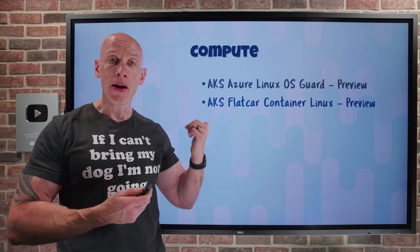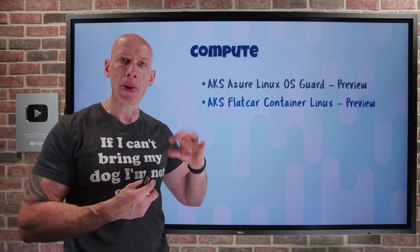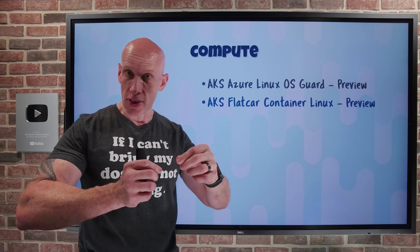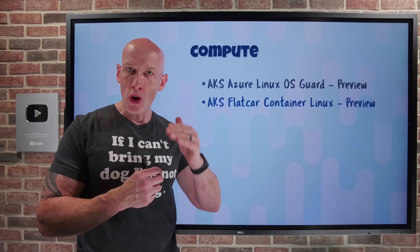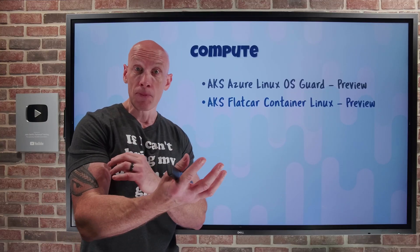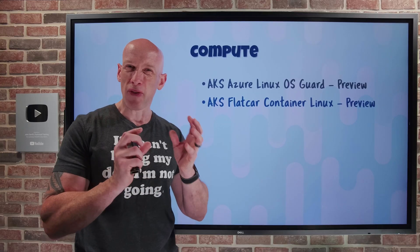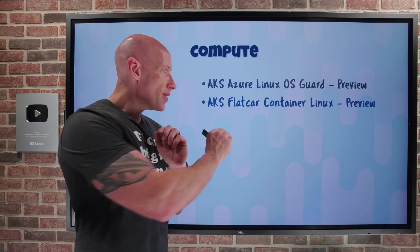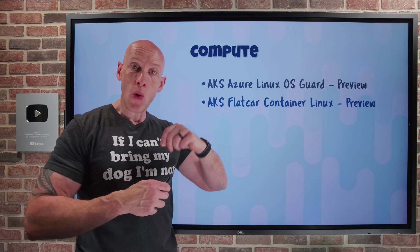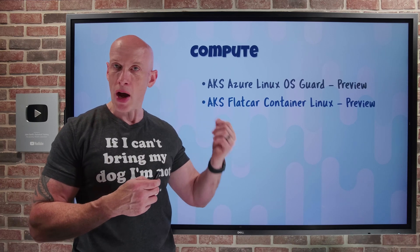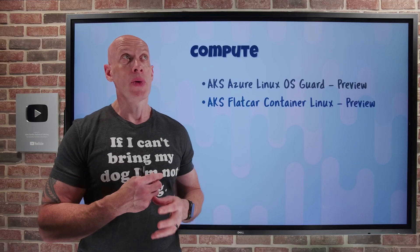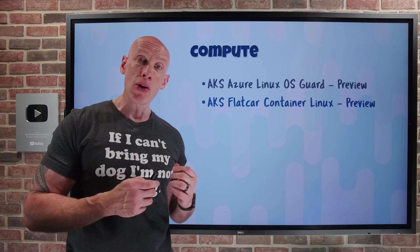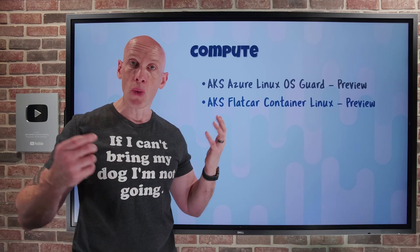AKS now supports Flatcar Container Linux in public preview. Flatcar is built on the idea of an immutable file system, ensuring predictable node behavior by preventing unauthorized changes and simplifying recovery from security incidents. Flatcar becomes the OS that your container nodes run within the node pool. It is open source and available across Kubernetes environments and clouds — see flatcar.org for more information.